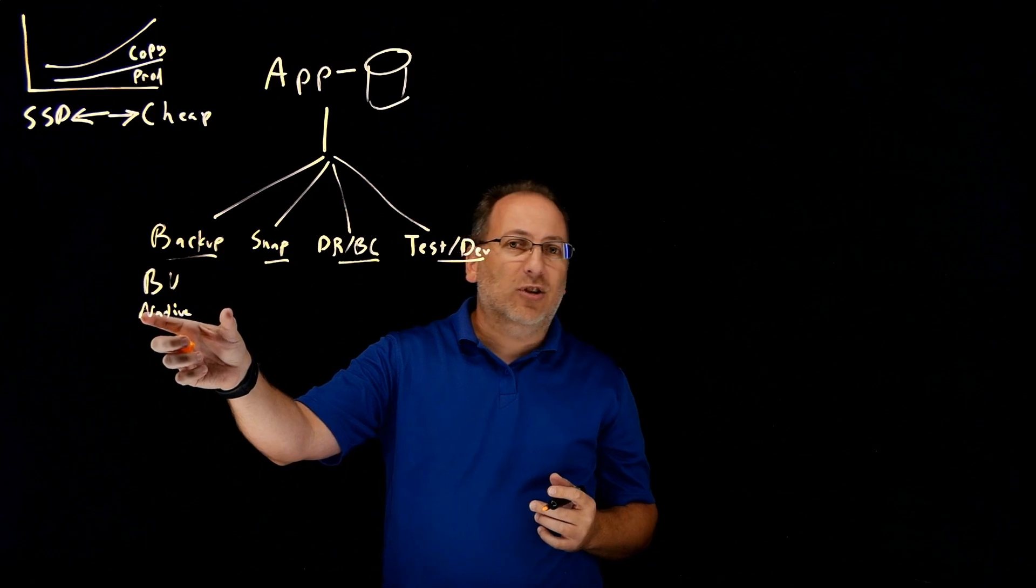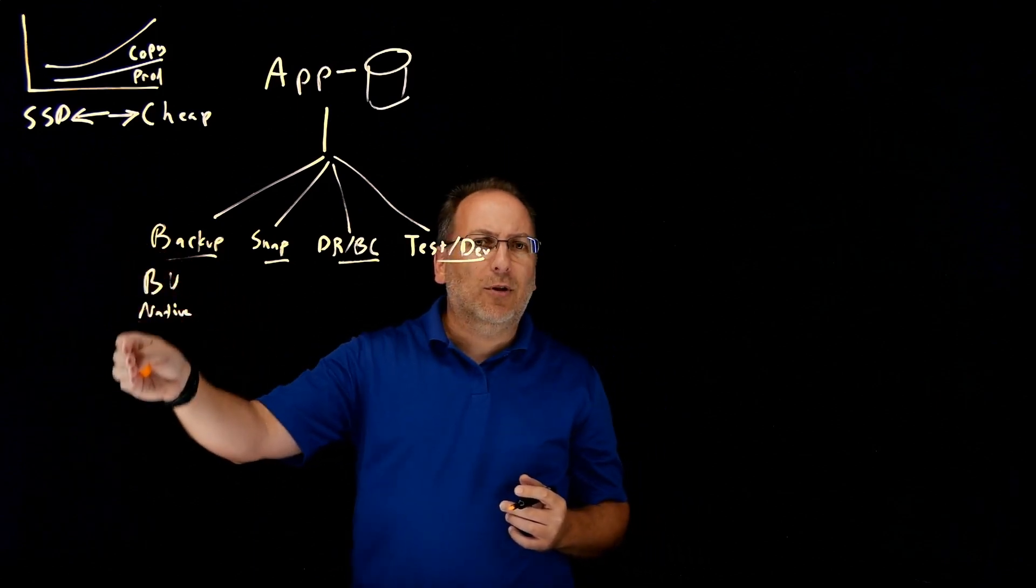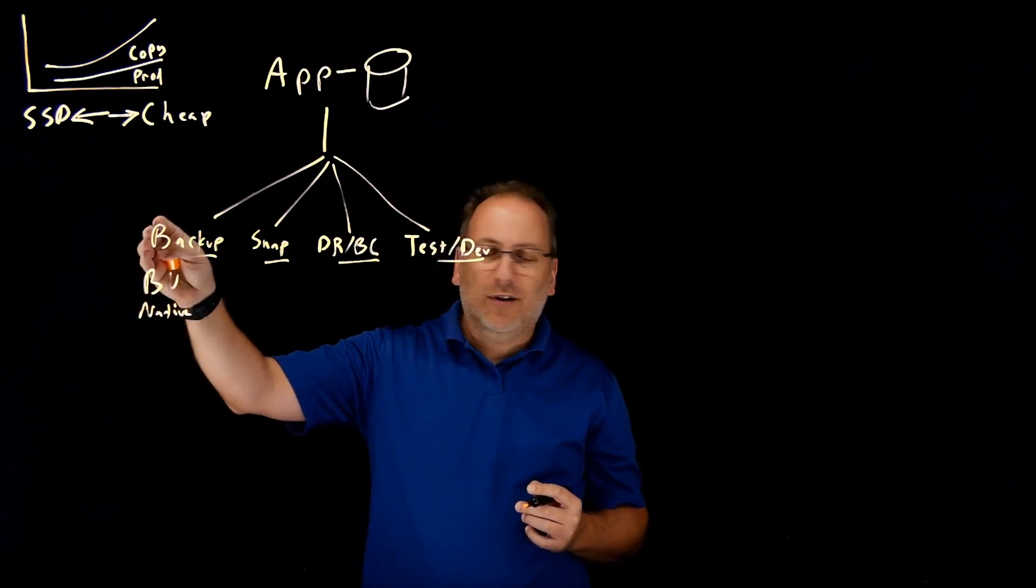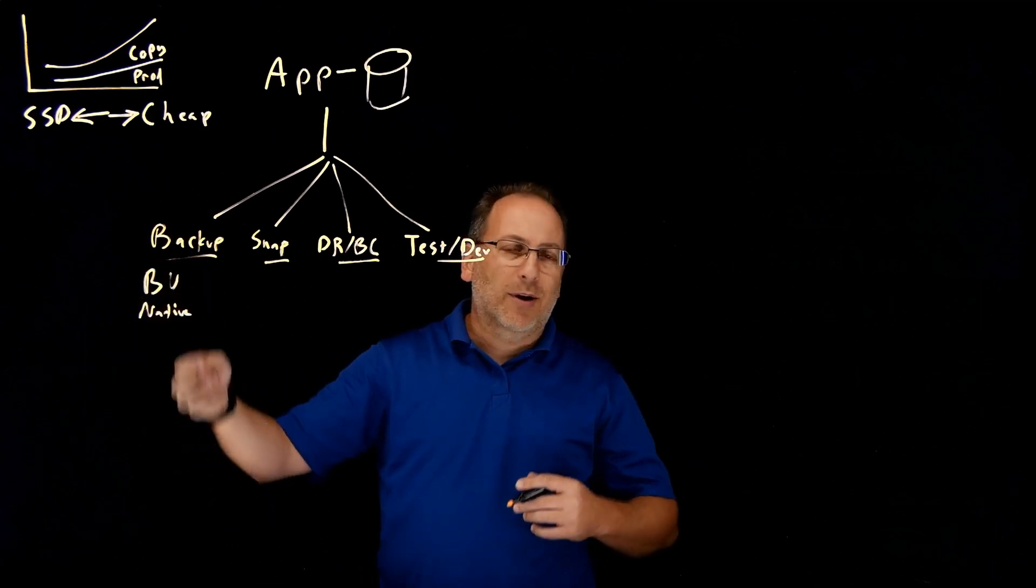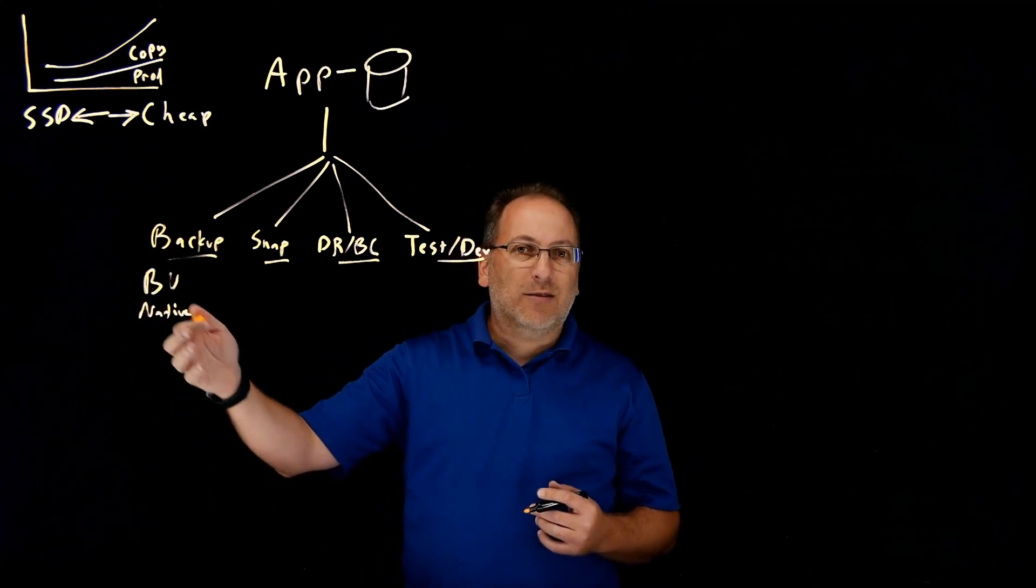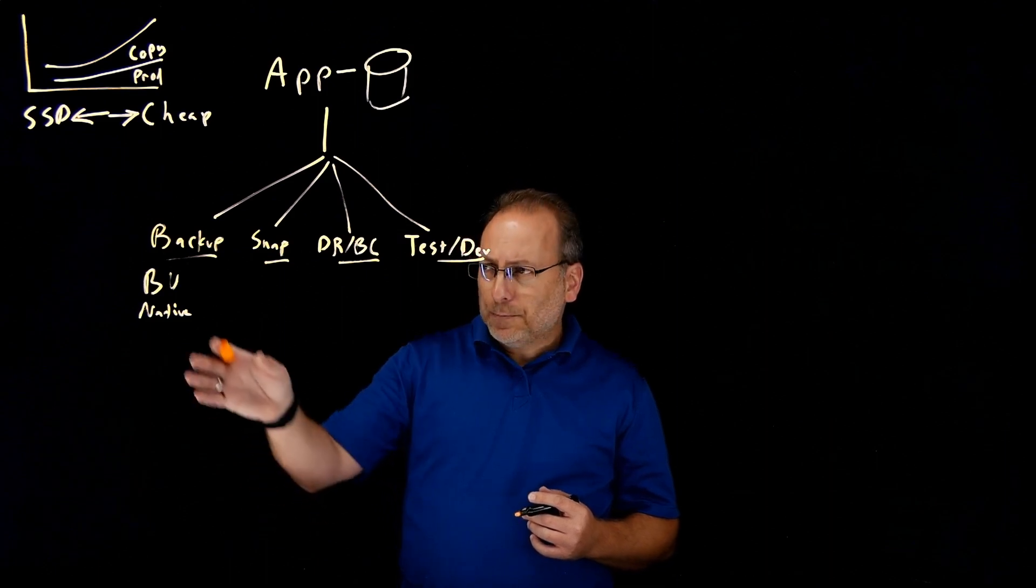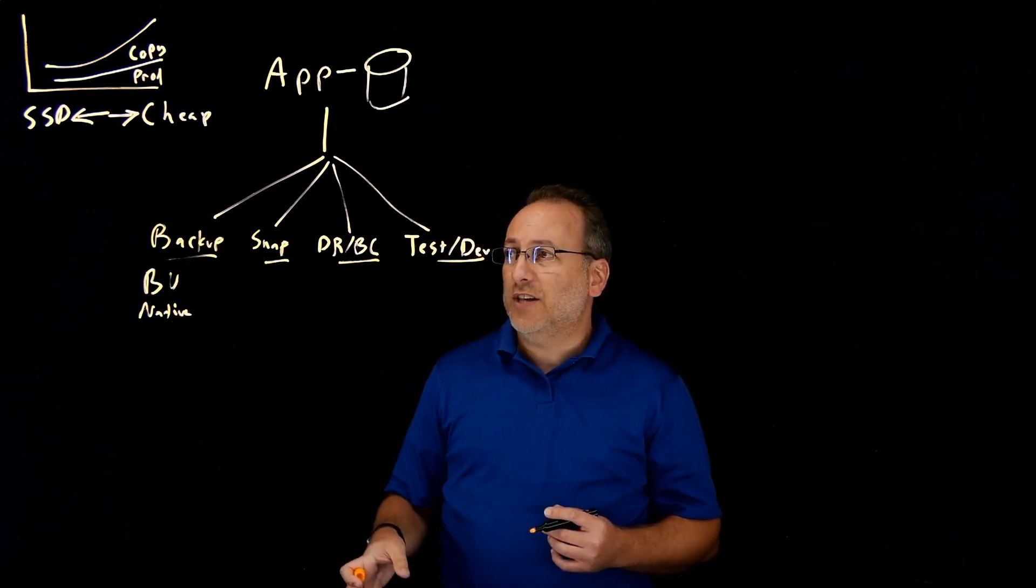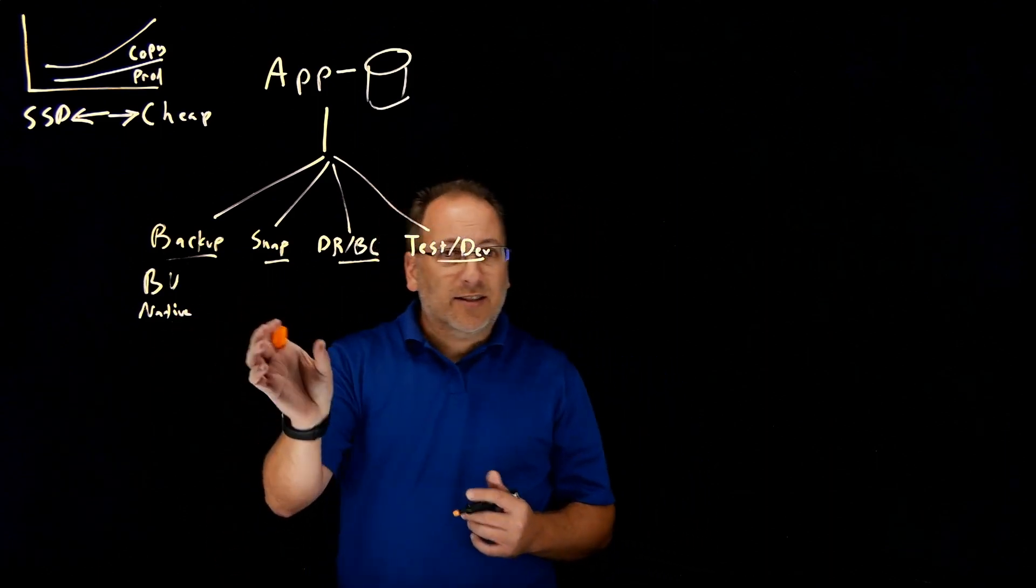You have application layer extracts. And all your typical vendors are in this space. You have your net backups and your Avamars and you have your IBM Spectrum Protects. You also have some newer players over here. You have your rubrics and cohesities, for example.